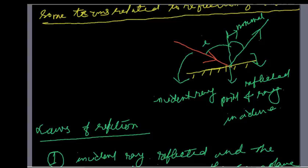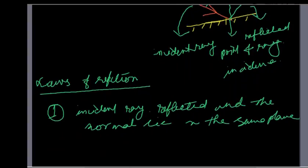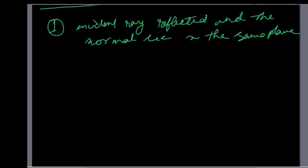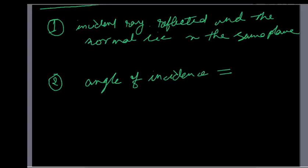Incident ray, reflected ray, and normal — this is the plane. Reflective reflection — first: angle of incidence is equal to angle of reflection. Angle of incidence is equal to angle of reflection. I is equal to R.